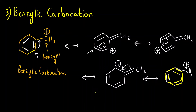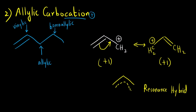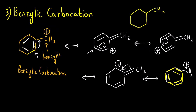To draw the resonance hybrid for the benzylic carbocation: draw the sigma bonds first, including the CH2 group, then along with the dotted lines for the delocalized pi electrons you add the positive charge — since benzene itself has no charge, the plus charge is distributed as shown. Draw the dotted lines around the ring and CH2 accordingly. This is the resonance hybrid.